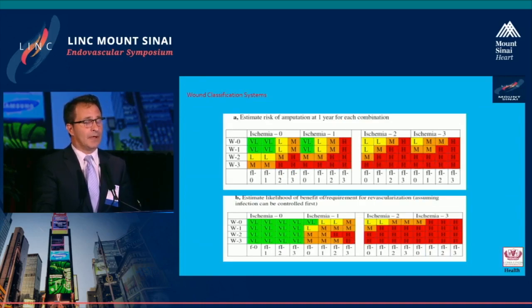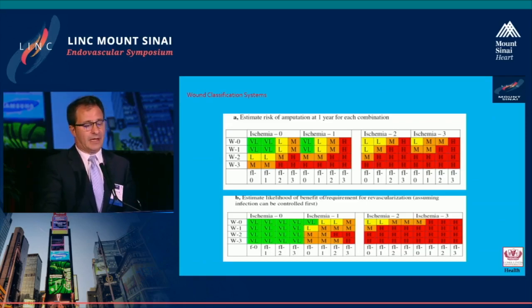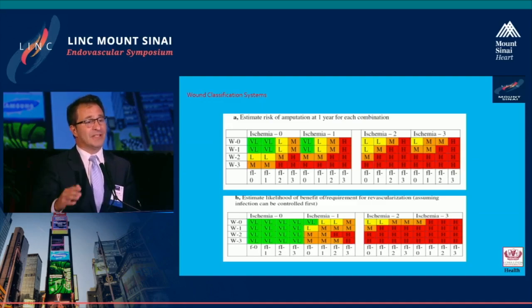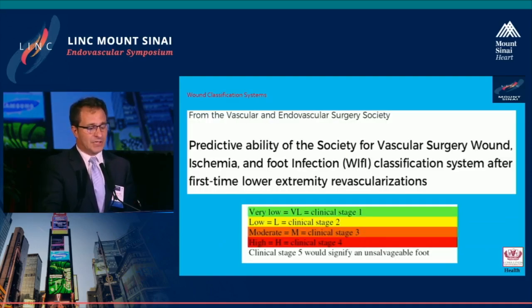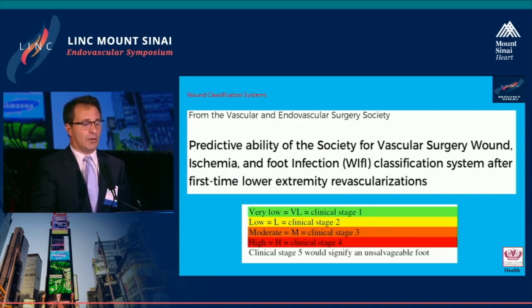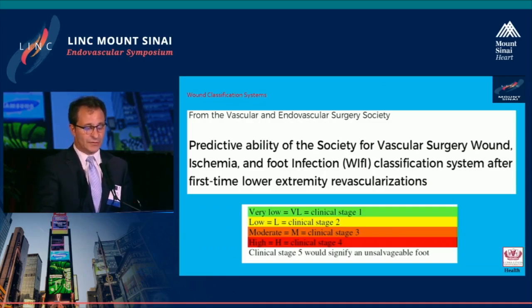This classification builds on previous systems including the Texas and Infectious Disease Society classifications, and explores 64 possible limb preservation scenarios depending on the grade of wound, ischemia, and infection. These 64 options can be substratified into clinical stages analogous to cancer staging: clinical stages 1 to 4 represent salvageable patients, while clinical stage 5 signifies an unsalvageable foot.